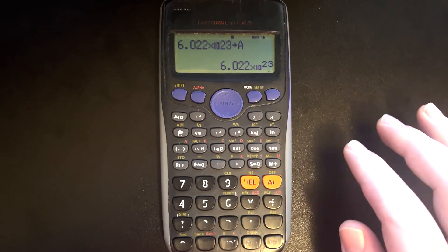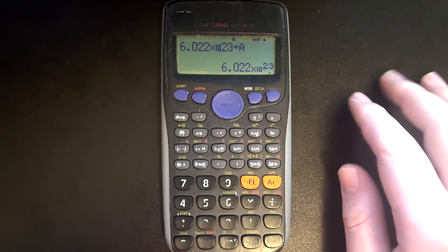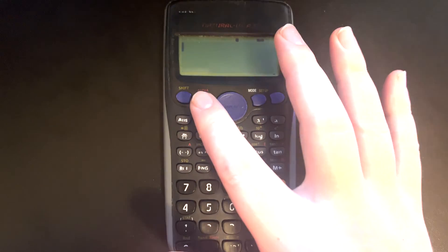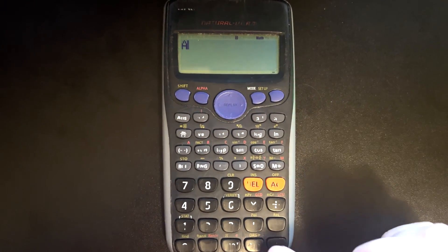And now you can see that the number has been stored in variable A. So how do I recall this number if I want to use it later? All I need to do is press alpha, and then press the A, and there we are.